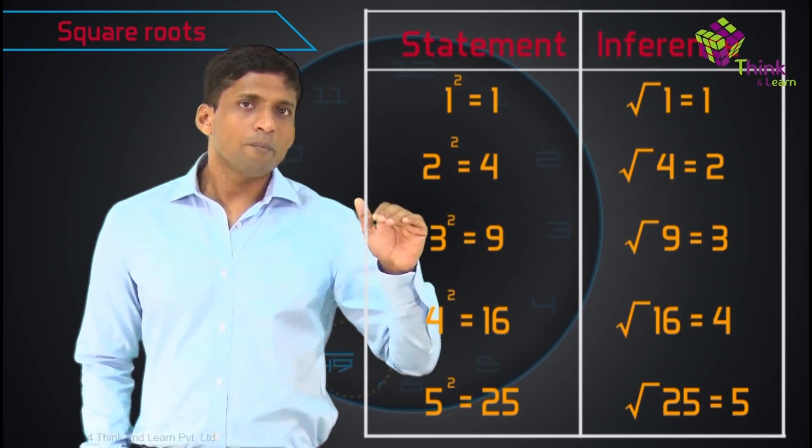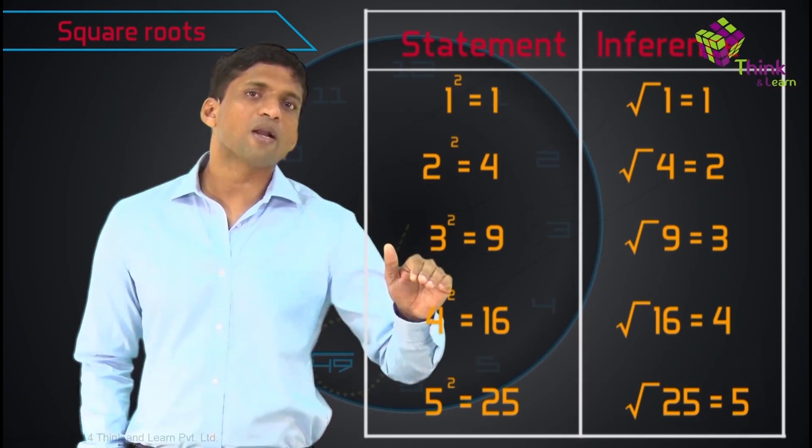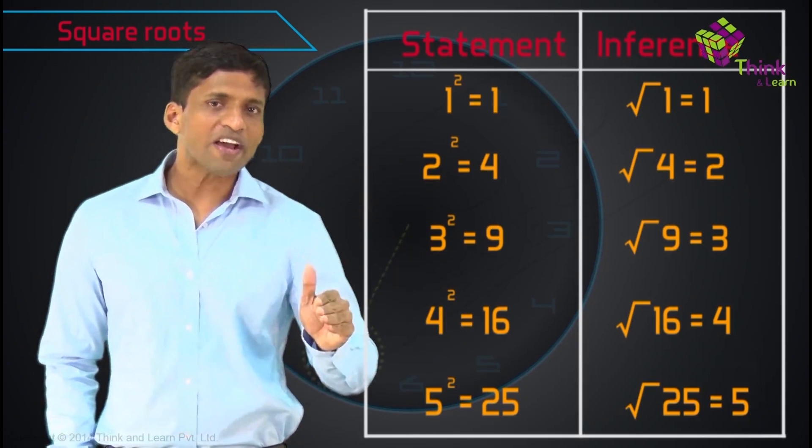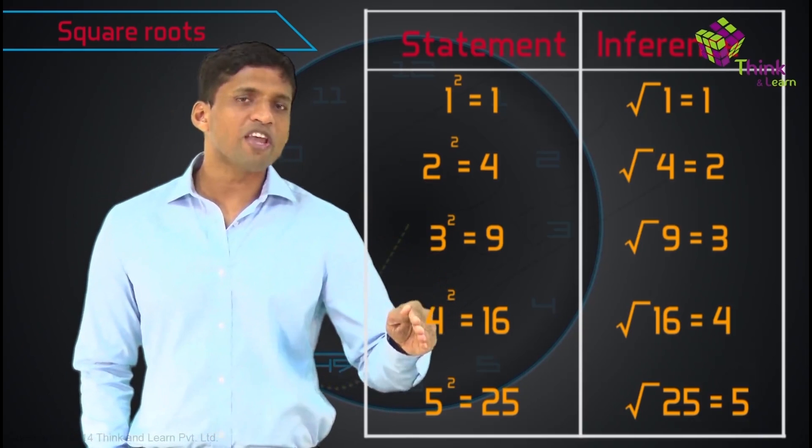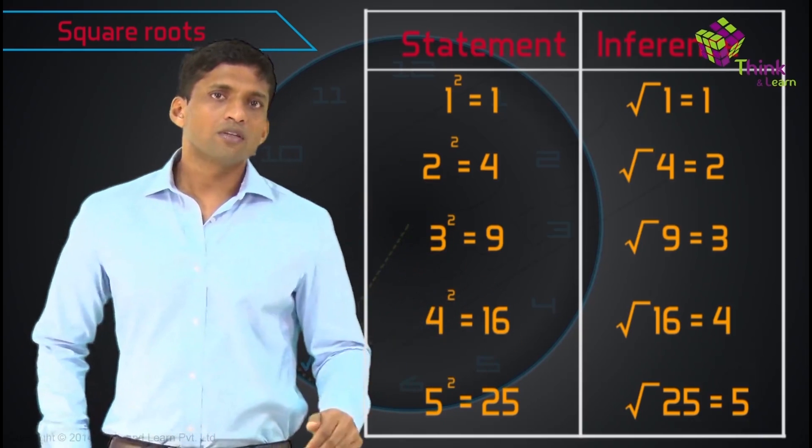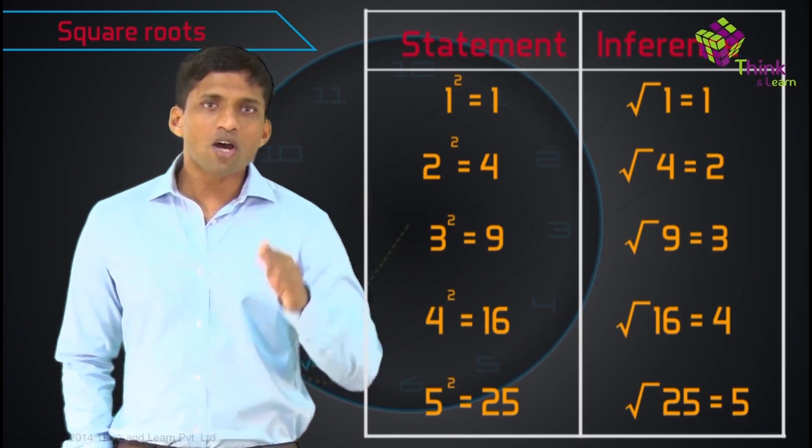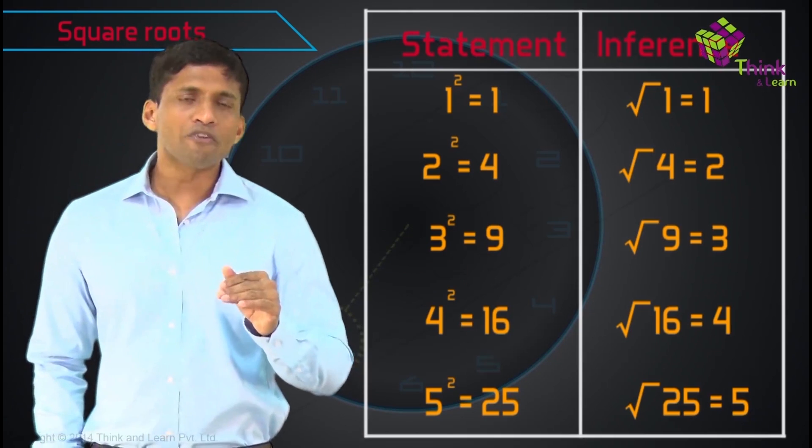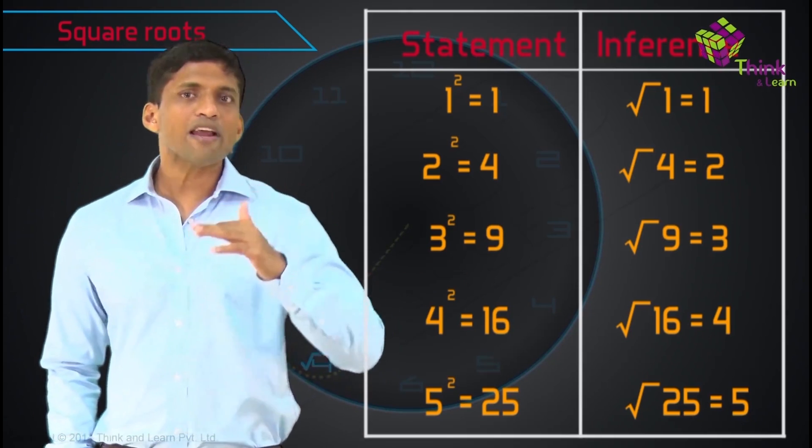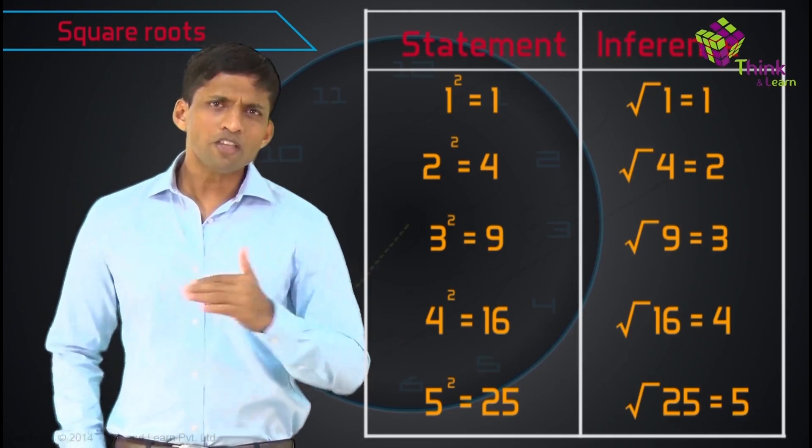I am doing it just to make sure that all of you understand this representation. 5 square is 25, square root of 25, this is how you read this, square root of 25 equal to 5. So square root as a concept, I am sure it's very clear to all of you. Now we will figure out how to find out square roots using different methods.